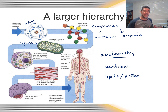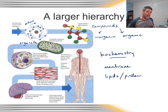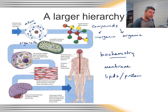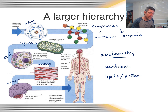Often the type of cell, or its function, is affected by the number and distribution of different types of organelles within the cell. So these organelles contribute to the cell, the cells contribute to tissues, tissues link together to form organs, and organs form organ systems.